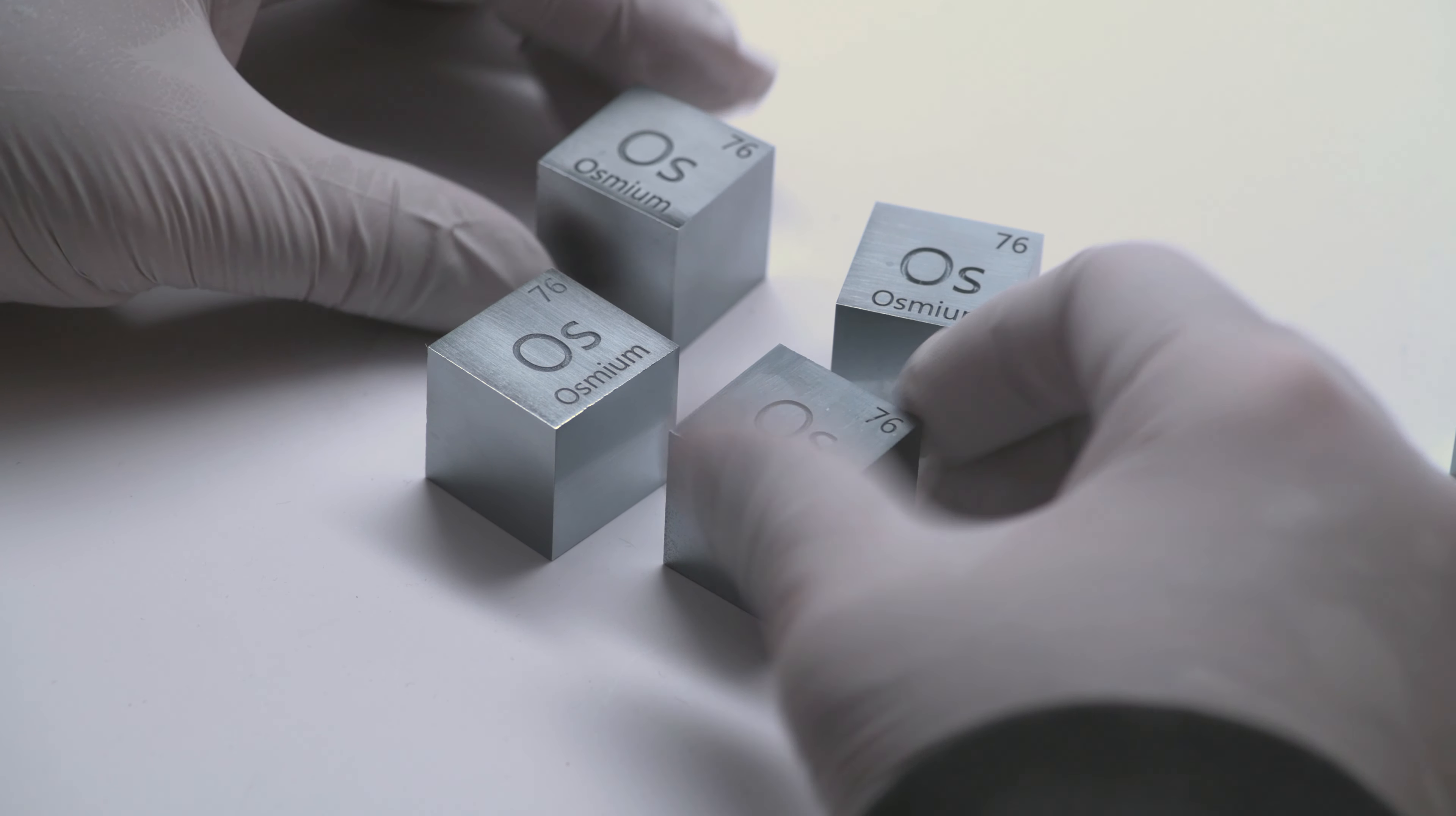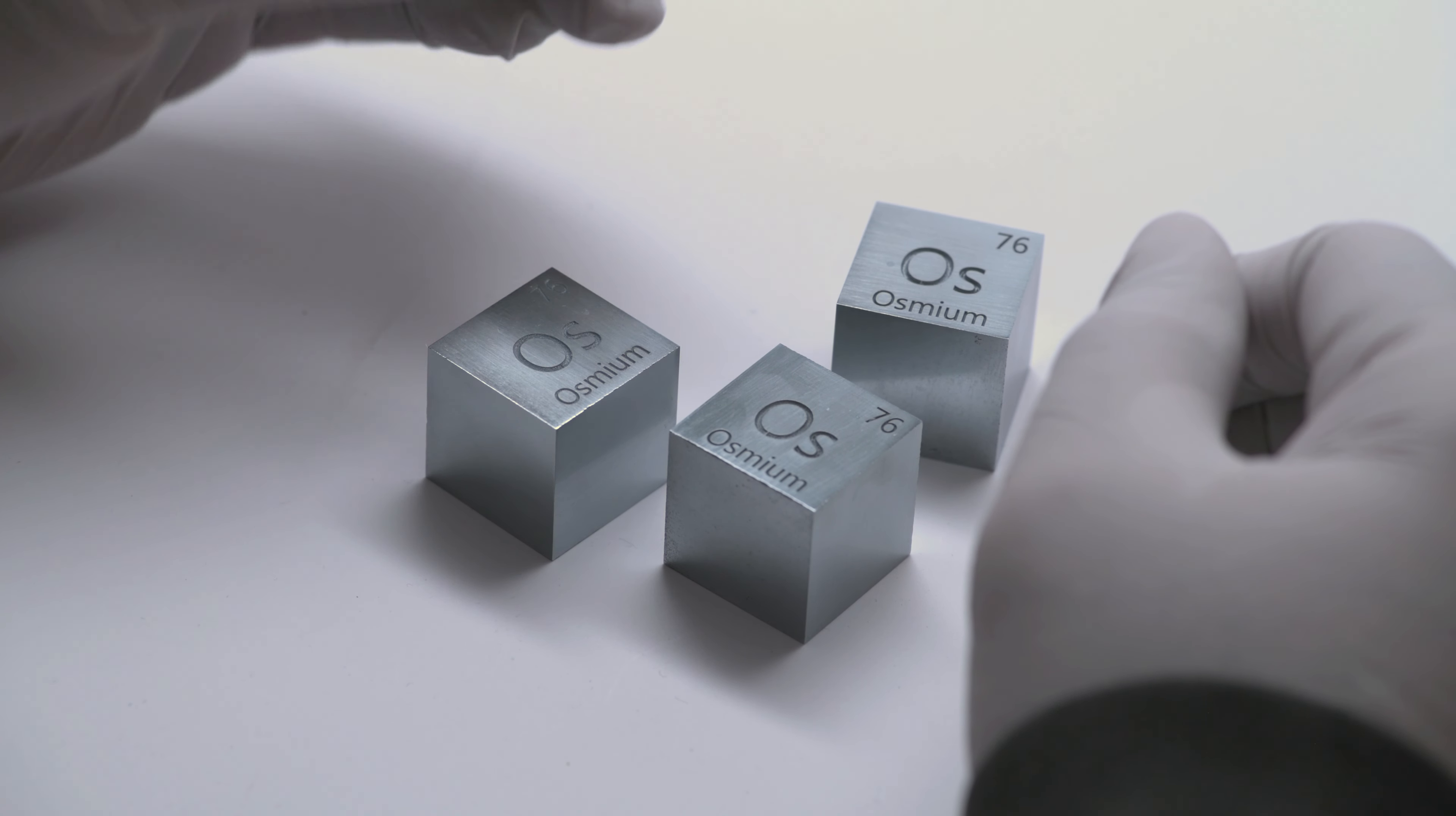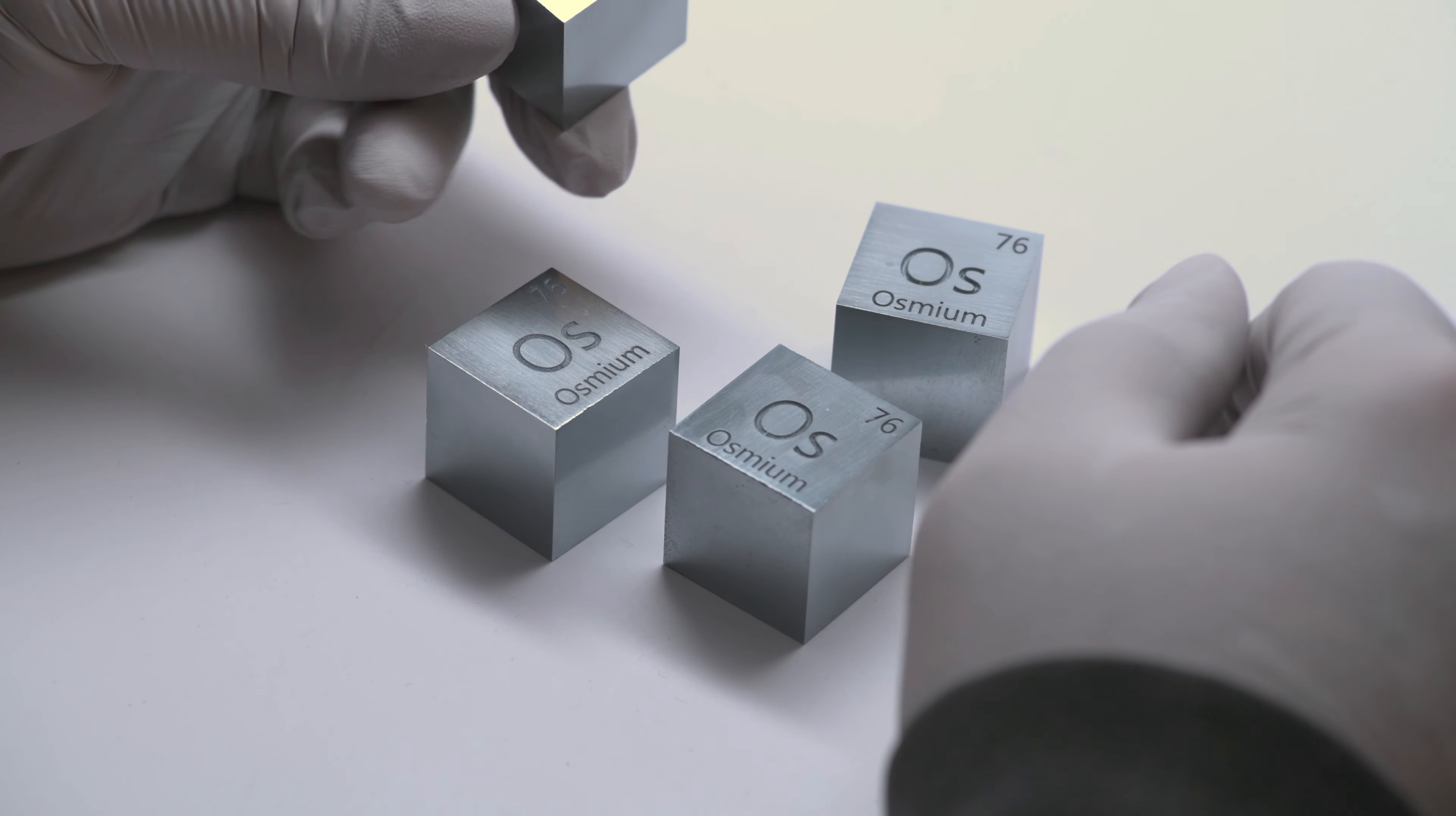The first is its density. Osmium blows everything away on the periodic table. If you thought tungsten was heavy, this is 10% or so heavier than that, more actually.